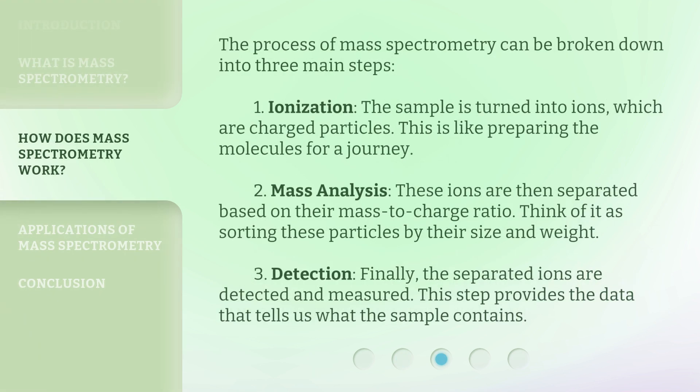The process of mass spectrometry can be broken down into three main steps. 1. Ionization: the sample is turned into ions, which are charged particles — this is like preparing the molecules for a journey. 2. Mass analysis: these ions are then separated based on their mass-to-charge ratio, like sorting particles by their size and weight. 3. Detection: the separated ions are detected and measured, providing the data that tells us what the sample contains.